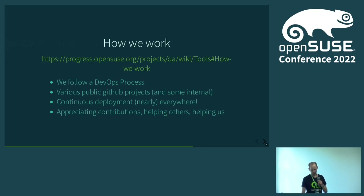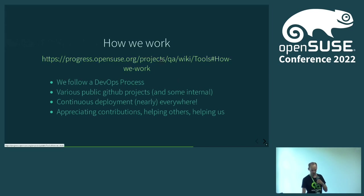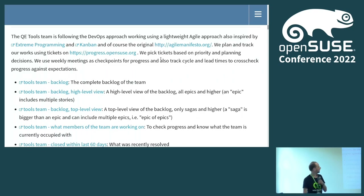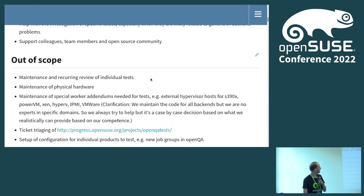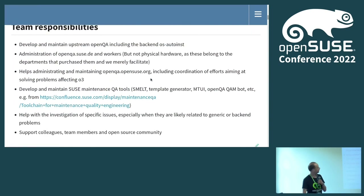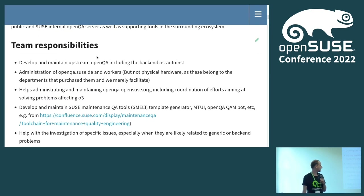We appreciate contributions, and we also try to help others. For example, if somebody encounters a problem within the OpenQA tests, we support them. Lately we are glad to see more contributions from outside users of OpenQA, such as other distributions providing things there. Now I would like to follow the link and take a look at the wiki page on progress.opensuse.org — what I've mentioned here as team responsibilities is documented there: what we maintain and what we administer.